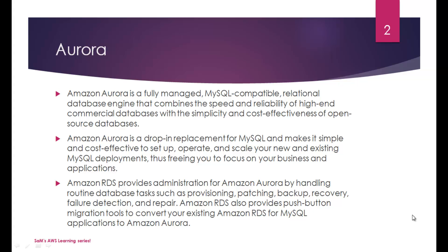AWS Aurora is an RDS database offering from Amazon. It's a MySQL compatible RDS engine that combines the speed and reliability of high-end commercial databases with the simplicity and cost-effectiveness of an open source database. It offers complex features similar to Oracle database, but it's simple — you can use the features available in the Amazon console and easily manage an Aurora instance. Amazon Aurora is a drop-in replacement for MySQL and makes it simple and cost-effective to set up, operate, and scale your new and existing MySQL deployments, thus freeing you to focus on your business and applications.